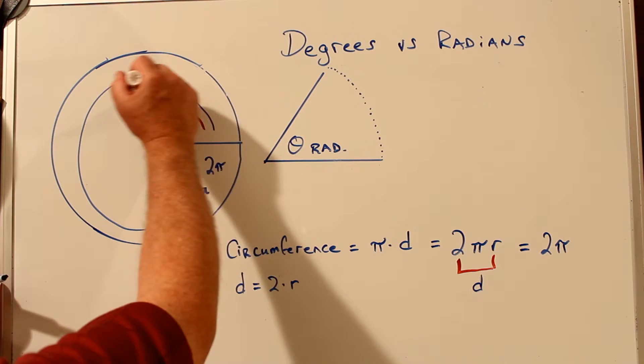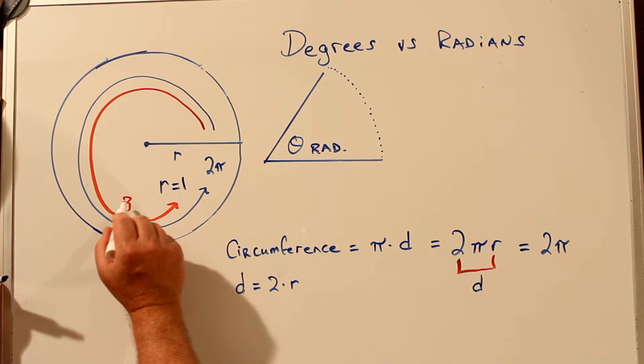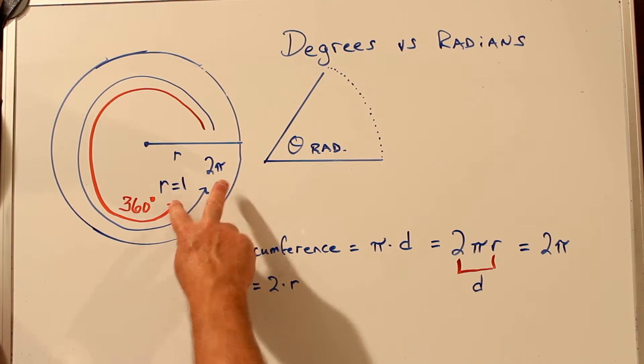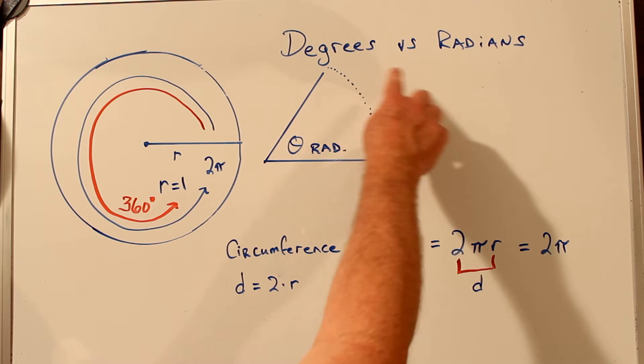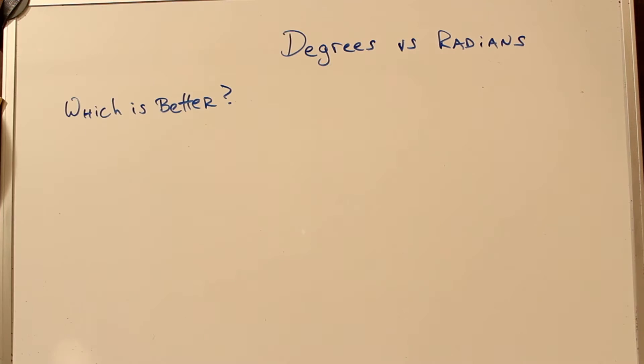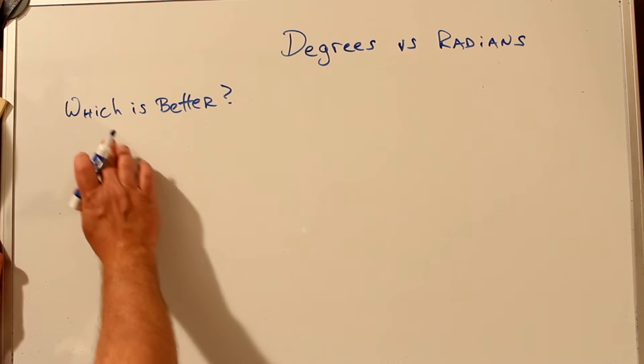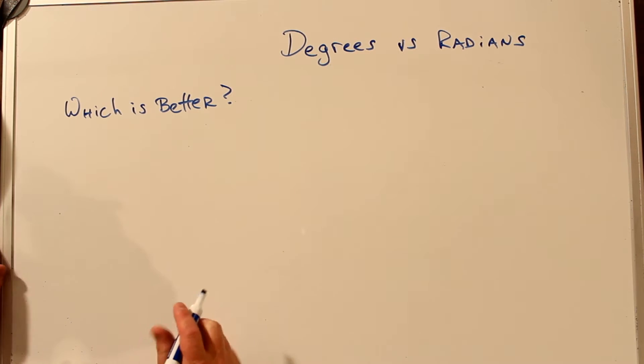In degrees, all the way around the circle was 360 degrees. Given these two numbers, we can figure out how to convert from degrees to radians or radians to degrees. But before we do the conversion, let's talk about which is better, degrees or radians.